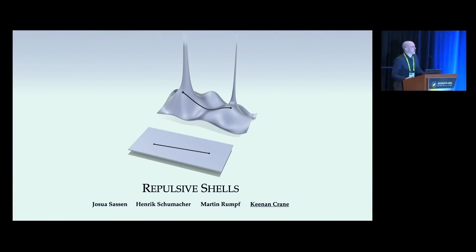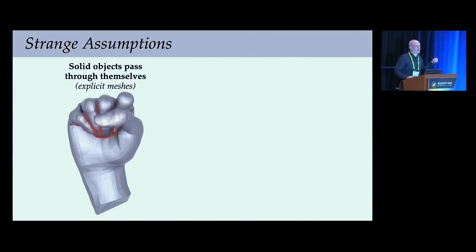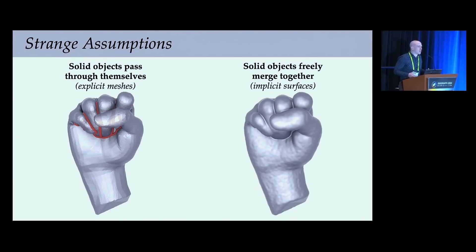There are assumptions that have been with us so long in computer graphics that we sometimes forget how strange they really are. If I make a fist, you don't expect my fingers to pass through themselves, and you certainly don't expect them to merge together like droplets of water. But that's what happens by default with standard representations, whether explicit or implicit, of surfaces.